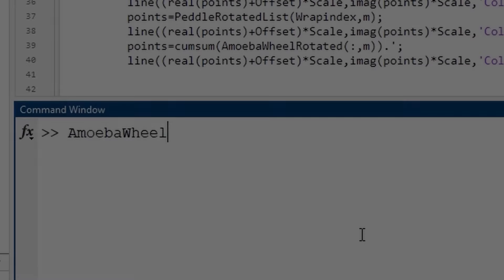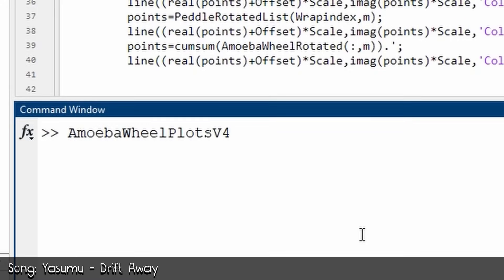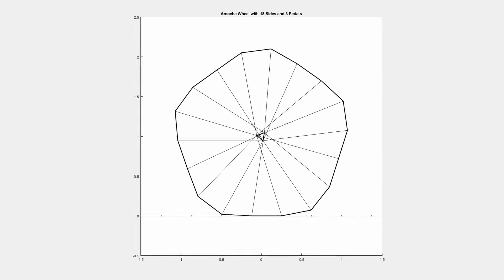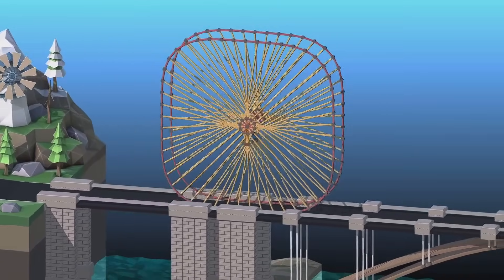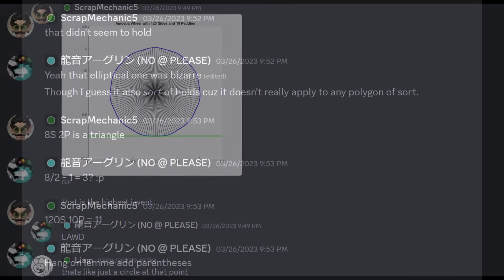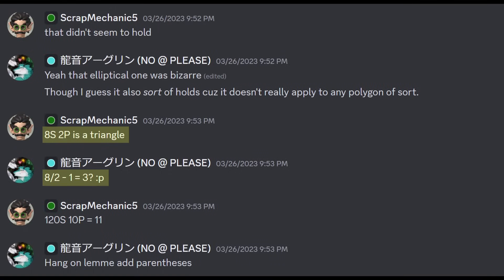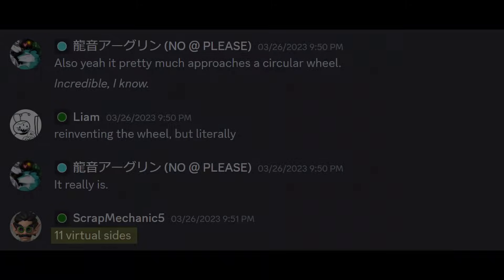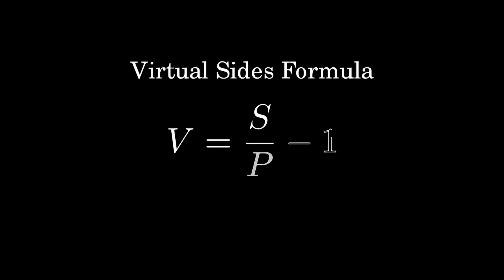In the previous video, I showcased a variety of Amoeba Wheels with different side dimensions, and you might have noticed that they tend to approximate regular polygons. There is a pattern to this. When Scrap made the Amoeba Wheels for the first time, I noticed that when you establish a fixed ratio between the number of sides and the number of pedals, the wheel gradually converges towards a specific shape. Scrap calls this virtual sides. The number of virtual sides is one less than the ratio between the number of sides divided by the number of pedals.